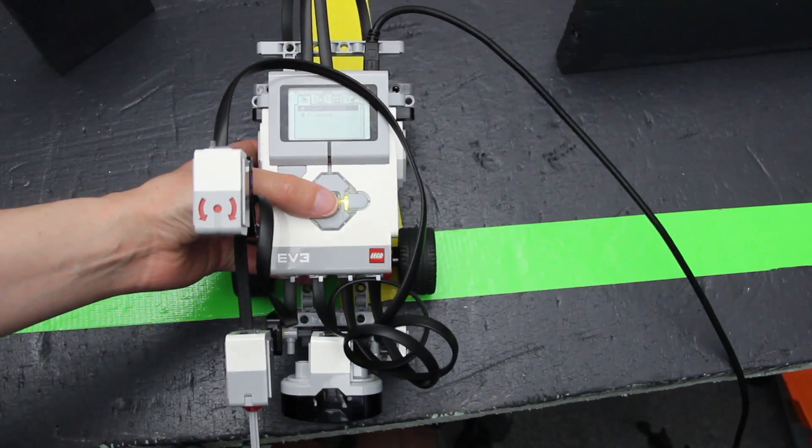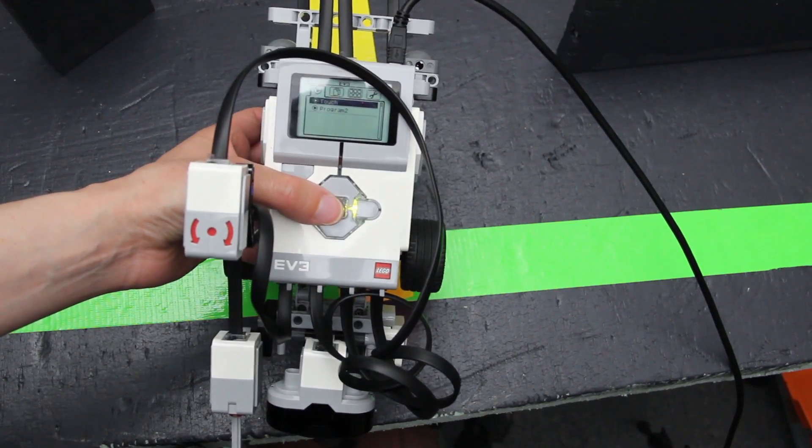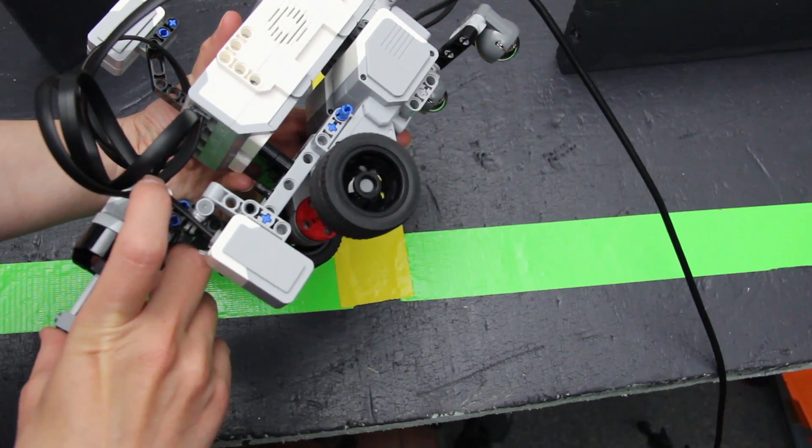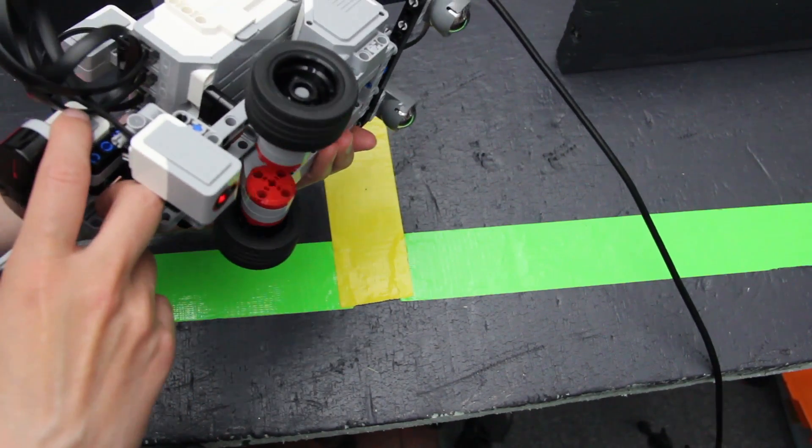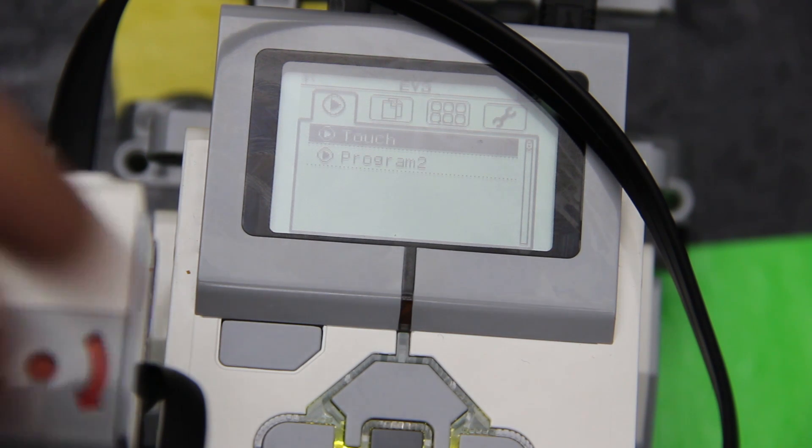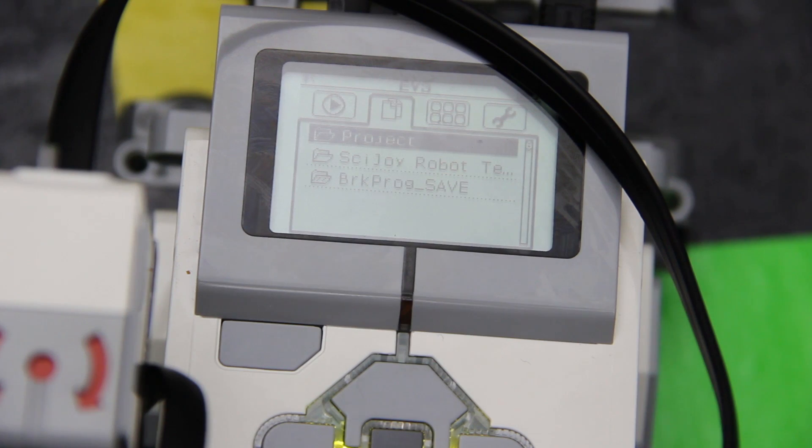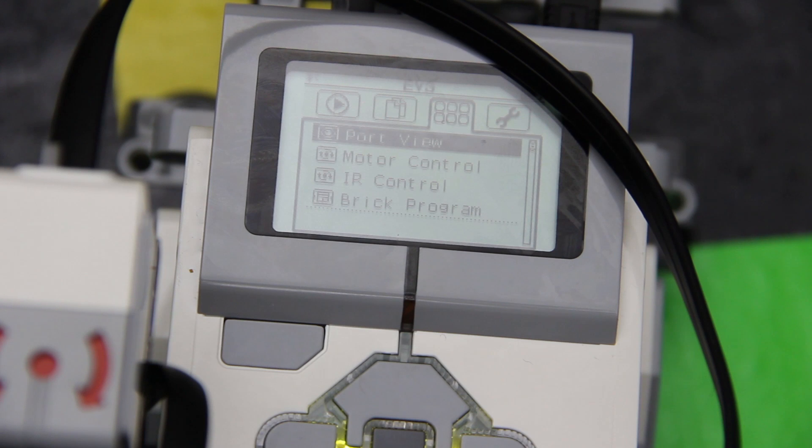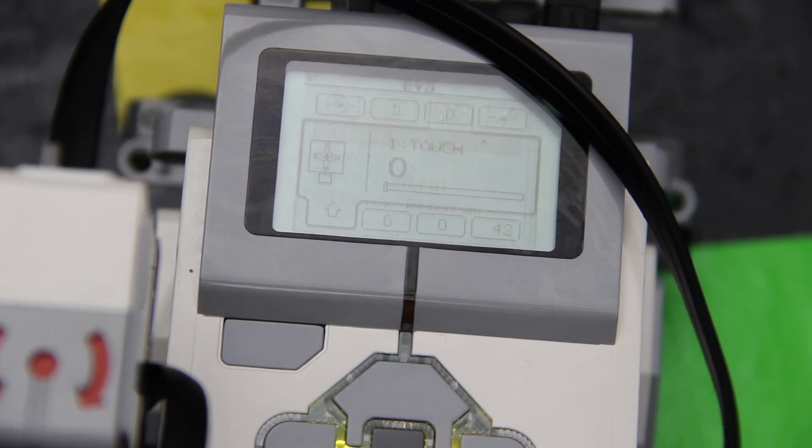We can look at one of the programs that has been downloaded onto this EV3. On the EV3 brick you can look at a lot of different things. You can look at your individual programs and they can be categorized by different projects and a cool feature is you can look at the different ports so you can see what your different sensors are saying as you move it around the course.